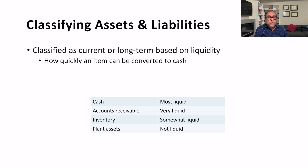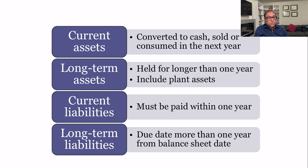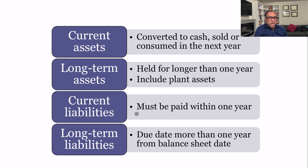Assets and liabilities are classified as current or long-term based on liquidity. We write cash at the top and land and buildings below because we sequence assets by their liquidity — the ability to be converted to cash, sold, or consumed within one year. Within current assets we follow: cash, accounts receivable, notes receivable, inventory, then prepaid expenses. Long-term assets follow. On the liability side, amounts due within one year are current liabilities, followed by long-term liabilities.